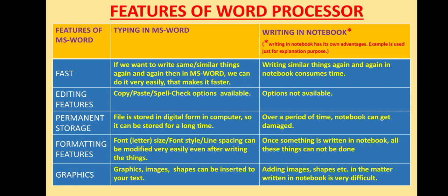Editing features: if you are typing in MS Word, you will get many editing features, for example Copy, Paste, Spell Check, etc. These types of options are not available when writing in a notebook. Permanent Storage: once you have made a document and saved it, it gets stored in digital form in your computer and can be stored for a long time. If you write in a notebook, over a period of time the notebook can get damaged. So, word processor gives you the feature of permanent storage.